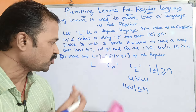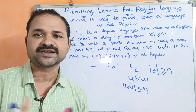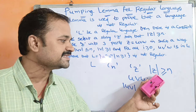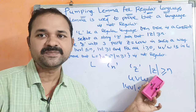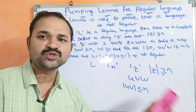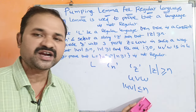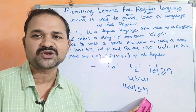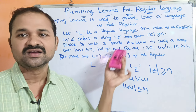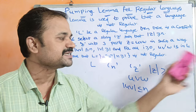So let us see the explanation one more time. L is a regular language, N is a positive integer constant. We select a string Z such that |Z| is greater than or equal to N. Then divide Z into three parts UVW. The first condition is |UV| less than or equal to N. The second condition is |V| greater than or equal to 1. For all i greater than or equal to 0, UV^i W is in L.